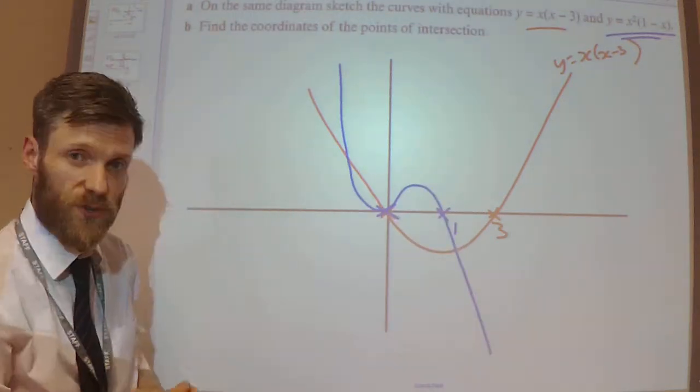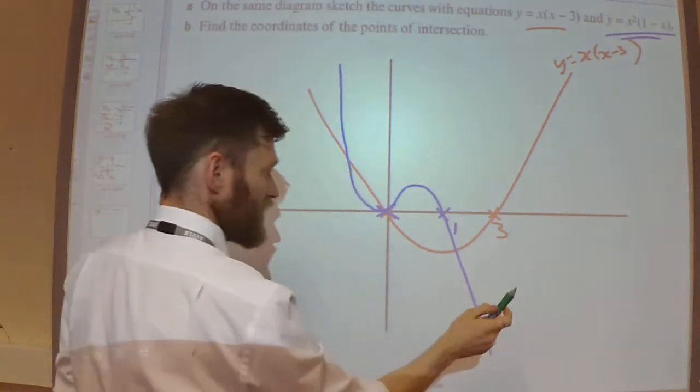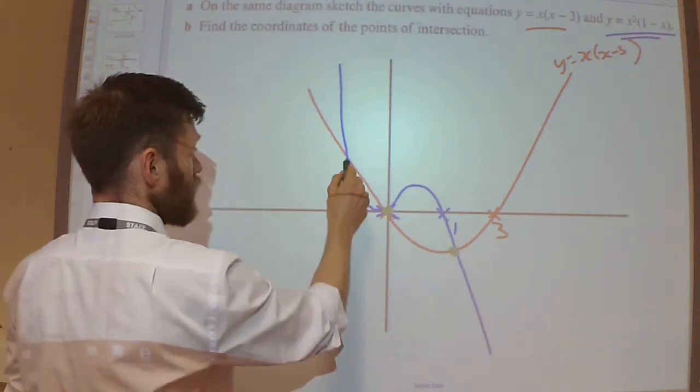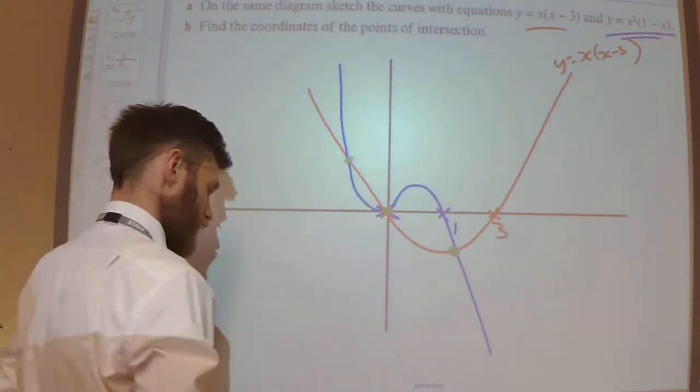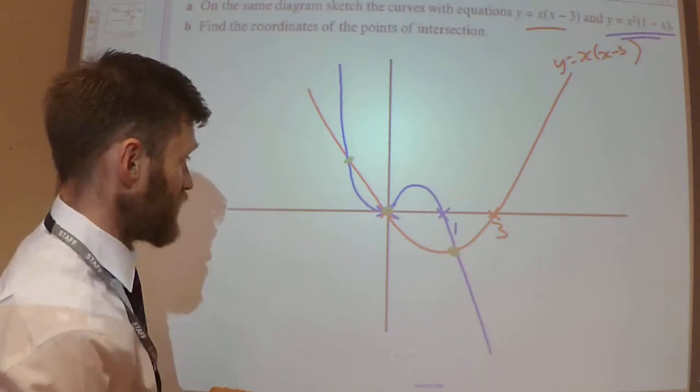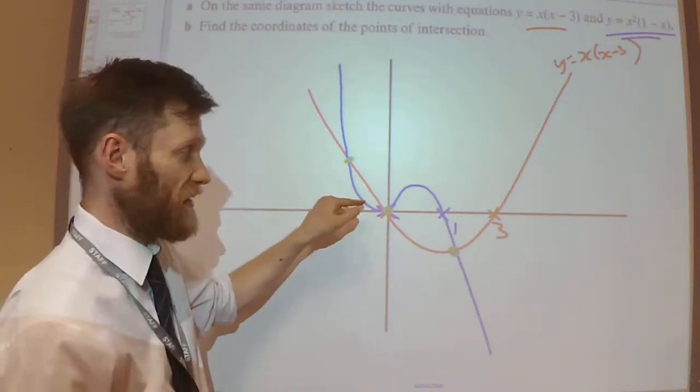Well, I've got a repeated root there, so that's what it comes back up. So I can see my lines crossed in three places. Here, here, and here. Right, part B. Find the coordinates of the points of intersection. So find these three coordinates. I already know one of them is (0,0).